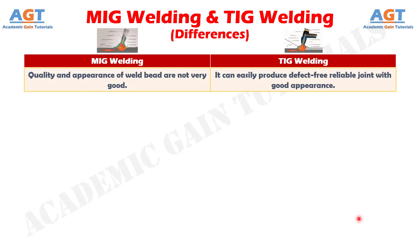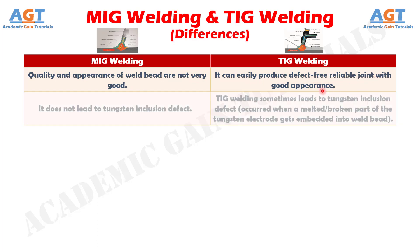Number 10: Quality and appearance of weld bead are not very good in MIG welding, whereas TIG welding can easily produce defect-free reliable joints with good appearance.